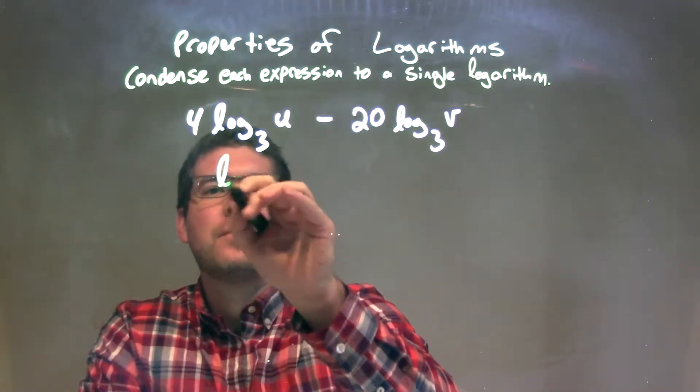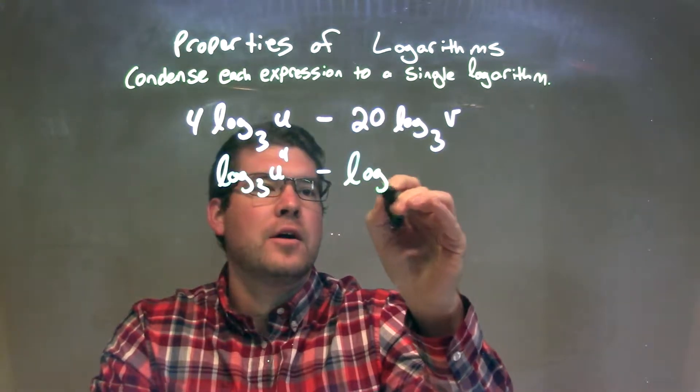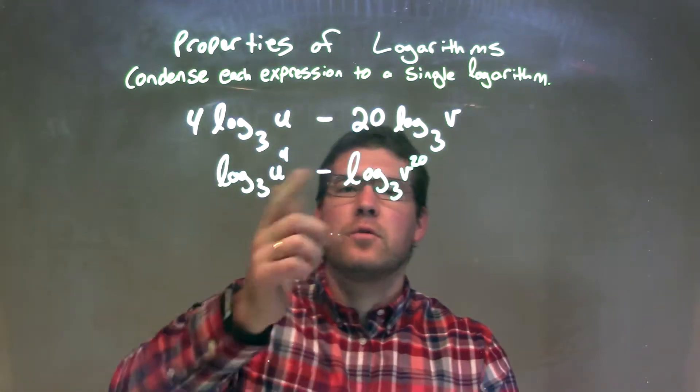So we have log base 3 of u to the 4th power minus log base 3 of v to the 20th power. So we have u to the 4th and v to the 20th.